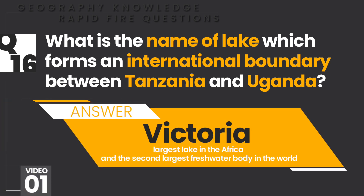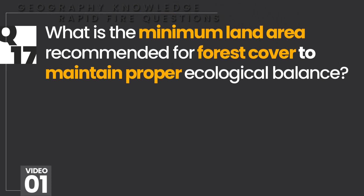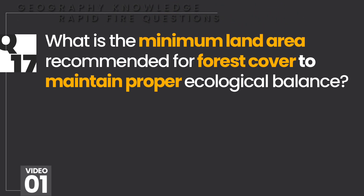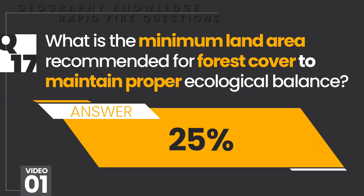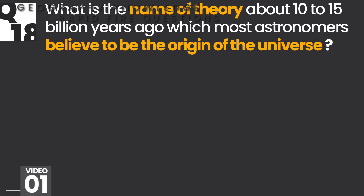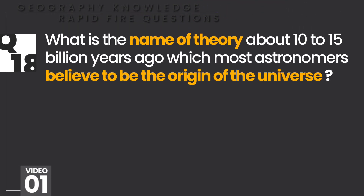What is the name of the lake which forms an international boundary between Tanzania and Uganda? Victoria. What is the minimum land area recommended for forest cover to maintain proper ecological balance? 25%.